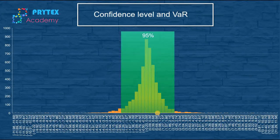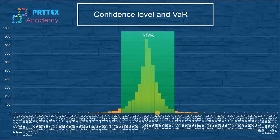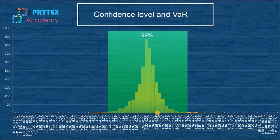Industry professionals mostly use 90%, 95%, and 99% confidence levels, but 95% and 99% are the two most commonly used in the industry. The 99% confidence level naturally captures more area of the distribution plot.